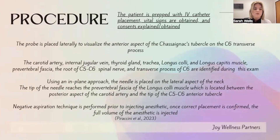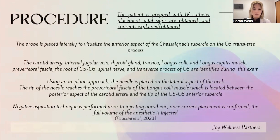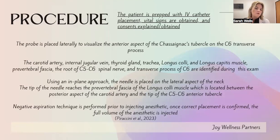For the procedure itself, the patient is prepped with an IV catheter, vital signs are obtained and monitored throughout and after, and consents are explained and obtained with all questions answered prior to starting. We begin with the patient lying flat and supine, with their head turned toward the ultrasound machine so they can see the entire process if they wish. We then place the ultrasound probe laterally to visualize the anterior aspect of Chassaignac's tubercle at the C6 transverse process.